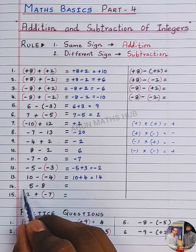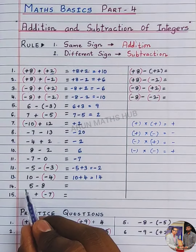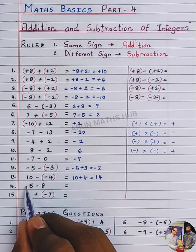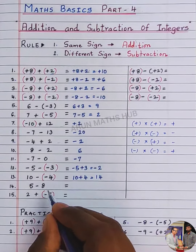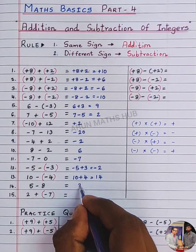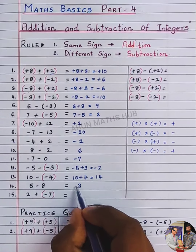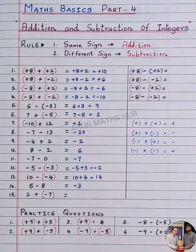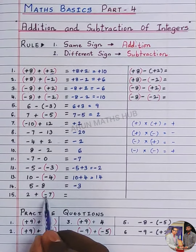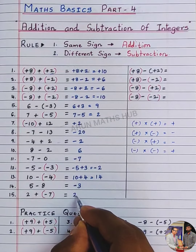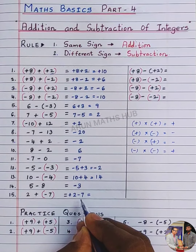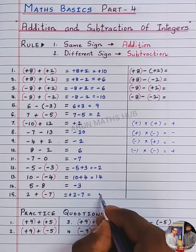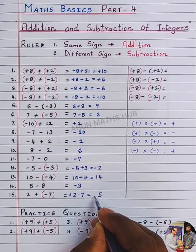5 minus 8 — we have two different signs: plus 5 and minus 8. No sign means it is plus. Different sign means subtraction. 8 minus 5 is 3, bigger number is 8, that is minus, so you get minus 3. Next: plus into minus is minus, so minus 2 minus 7. You have one positive and one negative number, so do subtraction. 7 minus 2 is 5, bigger number's sign is minus, so minus 5.